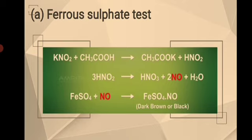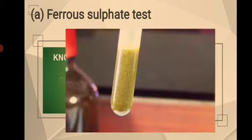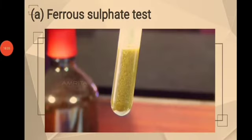In the experiment on ferrous sulfate, after adding dilute acetic acid and ferrous sulfate solution to a portion of the aqueous solution, a dark brown or black coloration was obtained. It was concluded that the dark brown or black coloration was due to the formation of FeSO₄·NO, or nitrosyl ferrous sulfate, confirming the presence of nitrite ions. This is the result of the ferrous sulfate test.